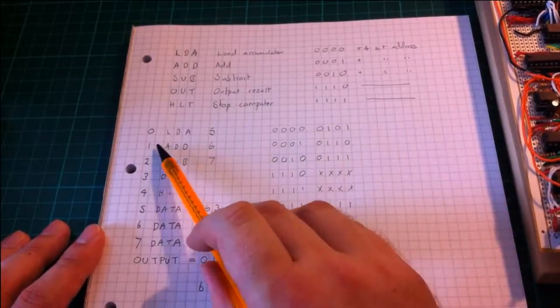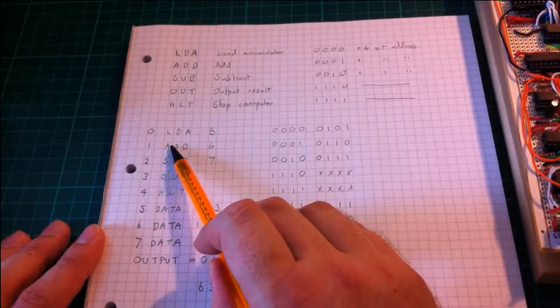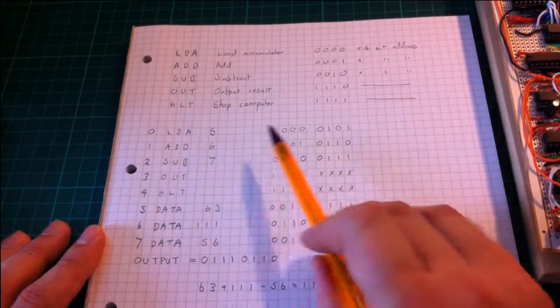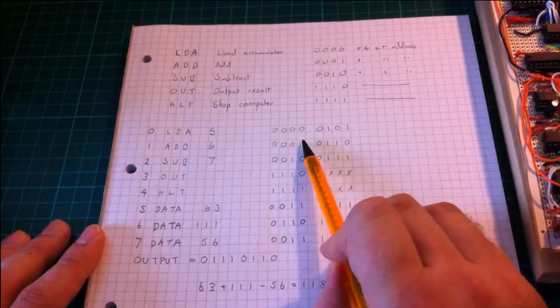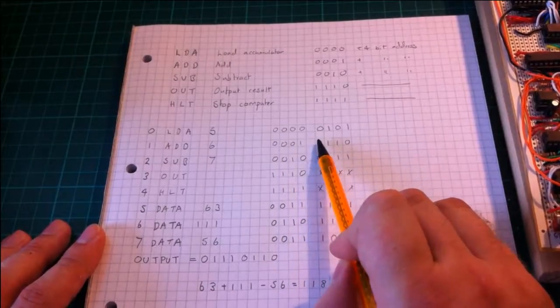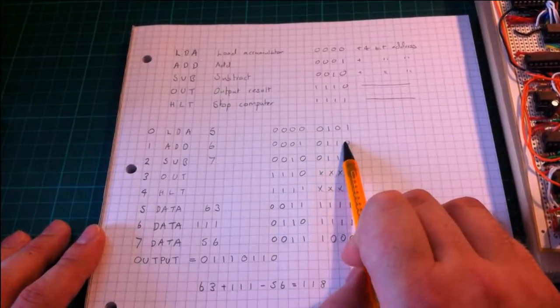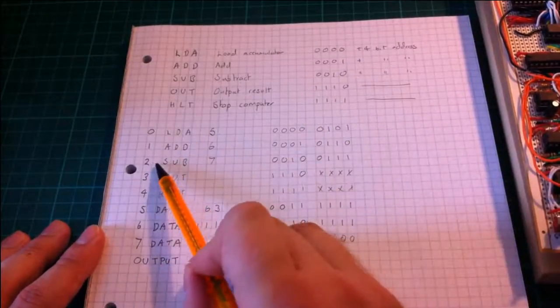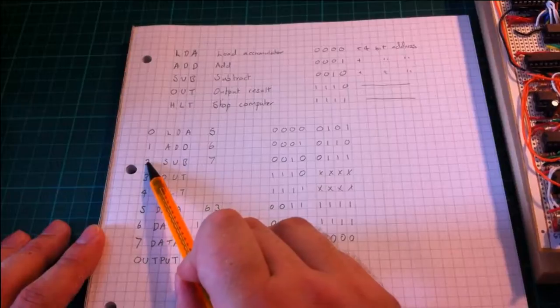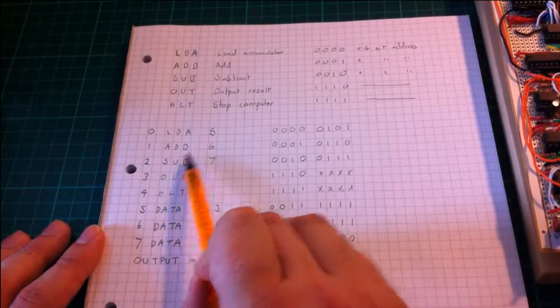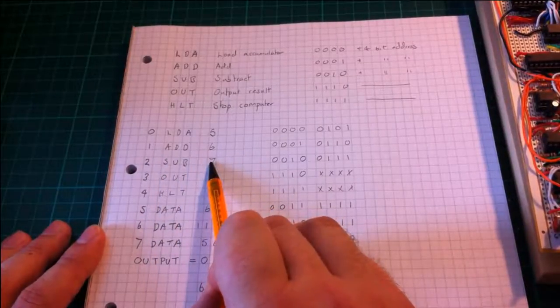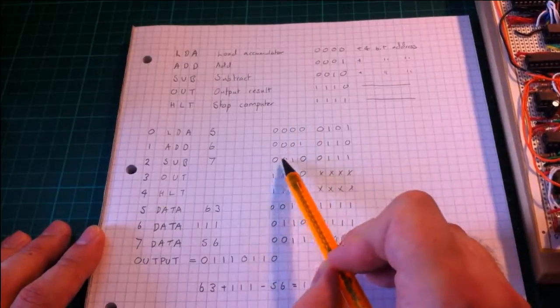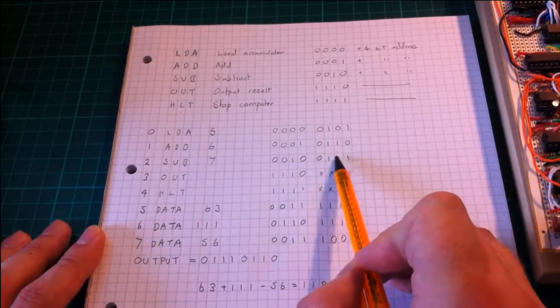Then the computer looks to address 1 where it sees the command 0001 for add 0110, the number at address 6. Then it looks to address 2 where it sees the command subtract the number at address 7, which is given by 0010 0111.